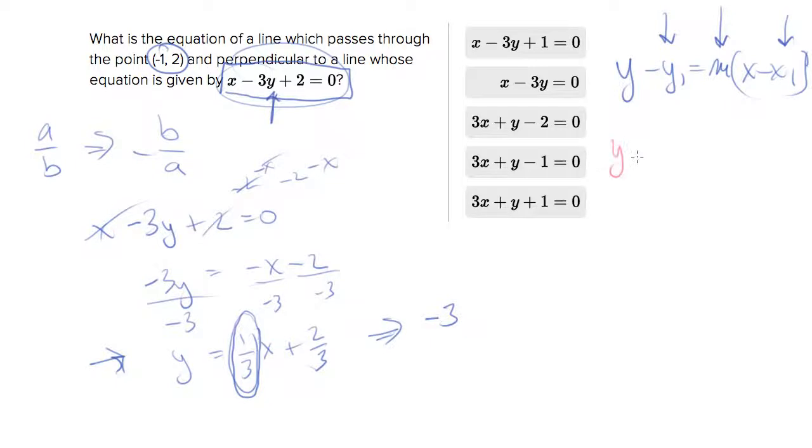So let's say that we have y minus y1, which is, remember they gave us a point over here which is 2, equals negative 3 times x minus x1, which is negative 1.